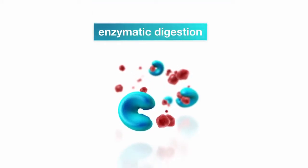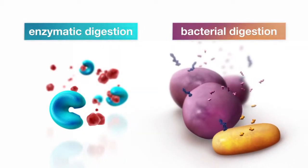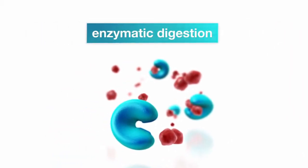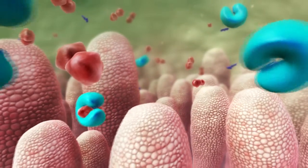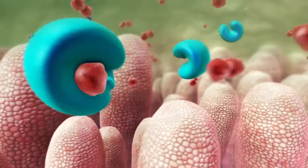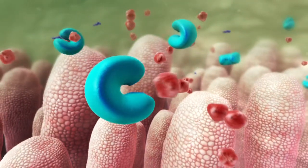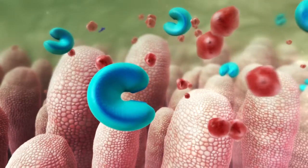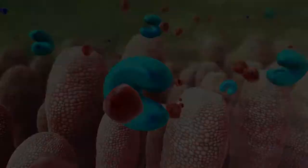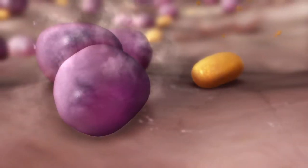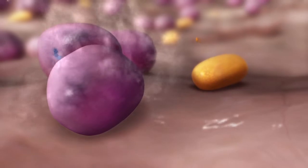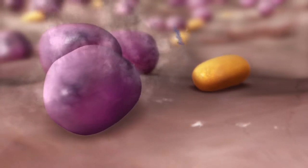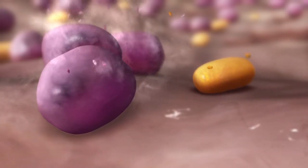We can distinguish between two kinds of digestion: enzymatic on the one hand, and bacterial on the other. Primarily in the small intestine, enzymes cleave nutrients into absorbable components. Feed ingredients that have not been digested by enzymes are broken down by the bacteria of the intestinal flora.